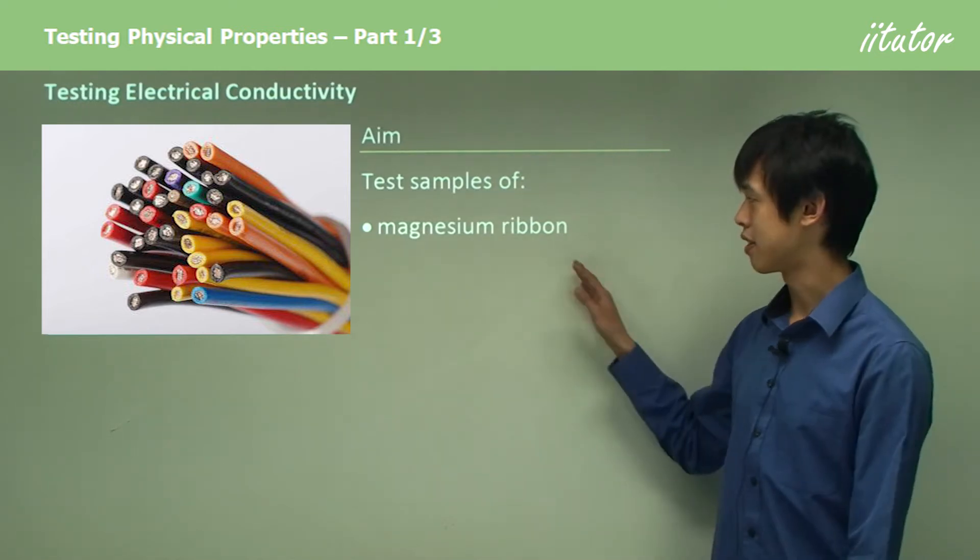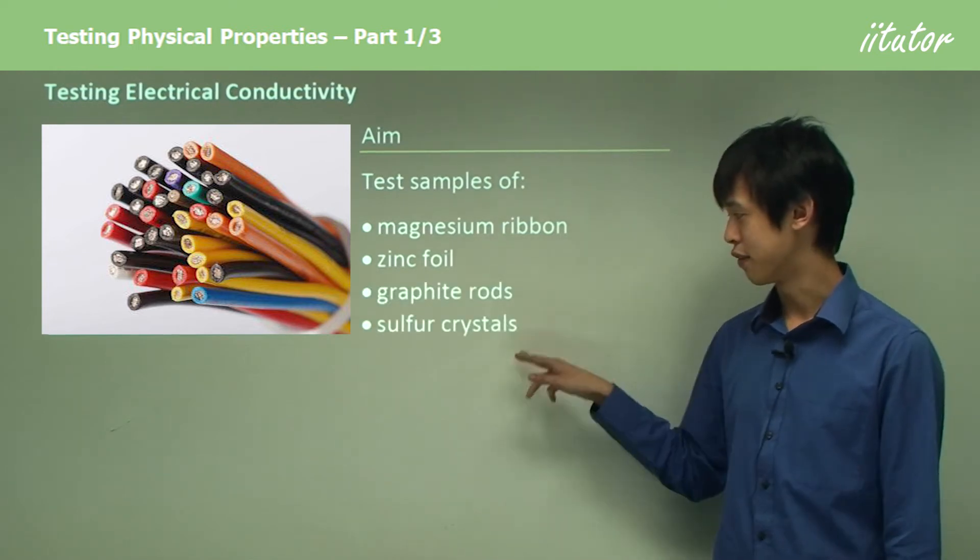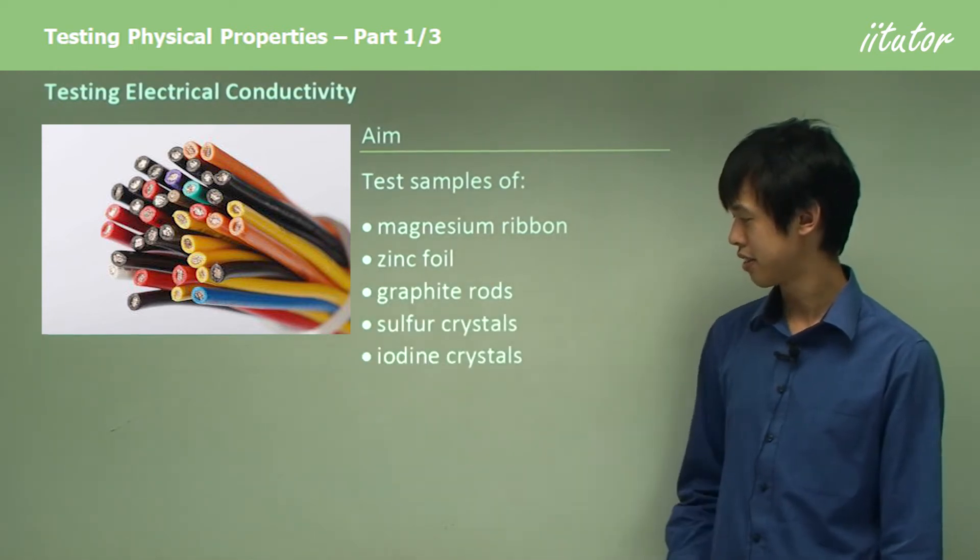We're going to test samples of magnesium ribbon, zinc foil, graphite rods, sulfur crystals, iodine crystals, as well as iron nails.